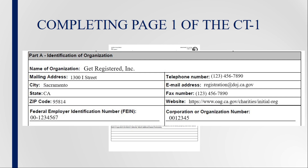Insert the corporation or organization number. All California corporations and foreign corporations that have qualified to do business in California are assigned a corporation number by the California Secretary of State. For corporate number information, visit the Secretary of State's website. Unincorporated organizations are assigned an organization number or entity ID number by the Franchise Tax Board upon application for California tax exemption. For unincorporated organization number information, visit the Franchise Tax Board's website.